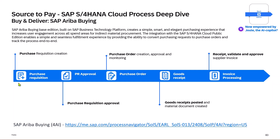We'll start by creating purchase requisitions by punching out to the SAP Ariba Buying Experience. This will then create a workflow for the purchase requisition approval. In this case, we'll just do an automated approval. In turn, it will then create a purchase order in S4HANA, and we'll be able to see the referencing of this back in the SAP Ariba Buying solution. Then we'll carry out a goods receipt within S4HANA, and then carry out the invoice processing, and be able to reflect the whole process against the purchase requisition within the SAP Ariba Buying solution.